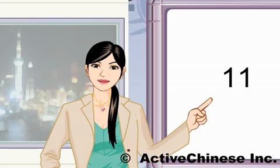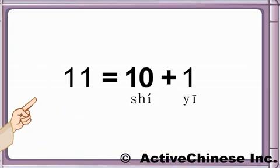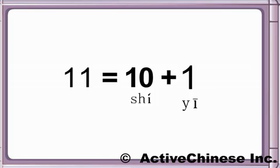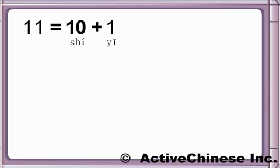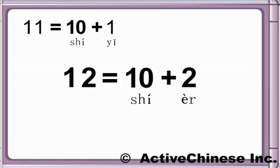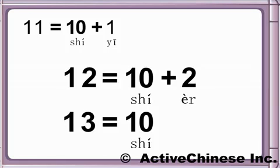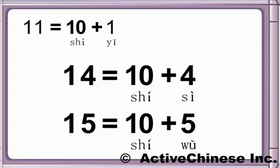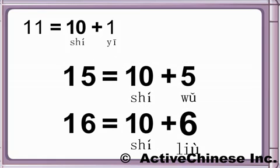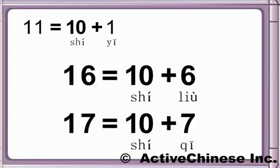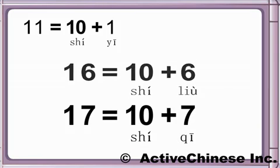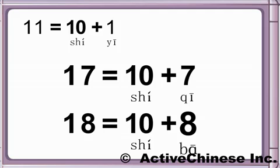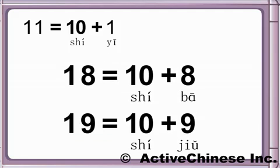Eleven in Chinese is ten-one: 十一. Twelve is ten-two: 十二. Thirteen: 十三,十四,十五,十六,十七,十八,十九.